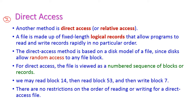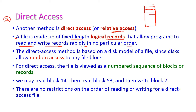Direct access, also called relative access, is the second model. Here the file is made up of fixed-length logical records, and all records should have equal size. It allows programs to read and write records rapidly in no particular order. Suppose I want to access the fifth record — there is no need to access records from the beginning. I can directly set the file pointer to the fifth record and read it directly. The direct access method is based on the disk model, since disk allows random access to file blocks. All secondary storage devices nowadays support this random access. For direct access, the file is viewed as a numbered sequence of blocks or records.